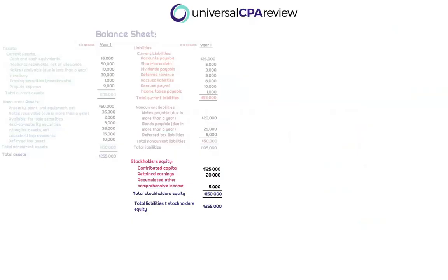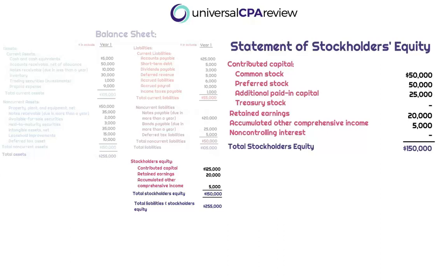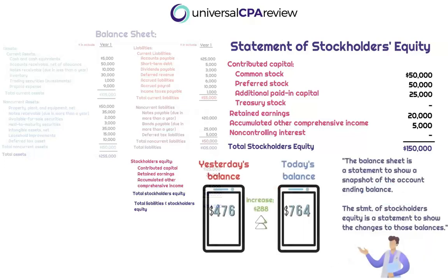So we see that the stockholders' equity section falls within the balance sheet, but we also need to conceptualize the fact that at the same time, stockholders' equity has its own statement. The key difference is that the balance sheet offers financial statement readers the summary of an ending balance — like when you check your bank account at JPMorgan Chase, you're looking at the ending cash balance. If you take a screenshot of it on your smartphone, that is your balance sheet in that moment — a snapshot in time. Whereas the statement of stockholders' equity represents a statement of changes of these accounts for the year.